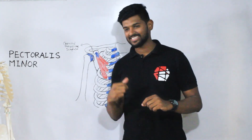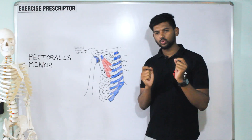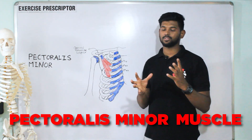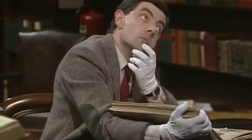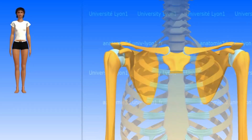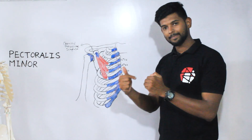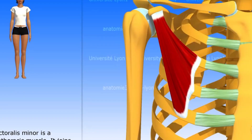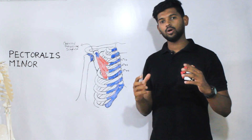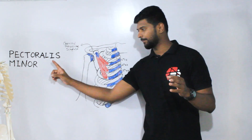Hi everyone, welcome to the Scientific Series of Muscle. Today we are going to learn and understand the pectoralis minor muscle. This muscle is called pectoralis minor because it is situated over the pectoral or chest region. Another muscle is also present in this region that is bigger, called pectoralis major, while this one is called pectoralis minor.